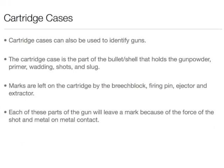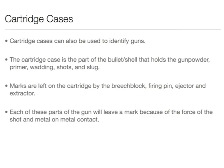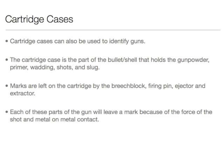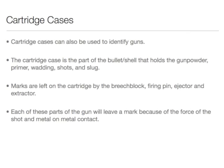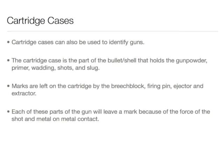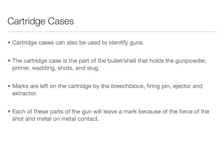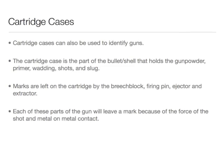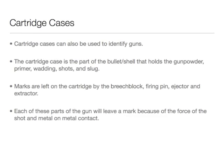Cartridge cases can also be used to identify guns. Cartridge cases are the part of the bullet that holds the gunpowder, primer, wadding, shot, slug, etc. Marks are left on the cartridge by the breech block, firing pin, ejector, and extractor. Each of these parts of the gun will leave a mark because of the force of the shot and the metal-on-metal contact.